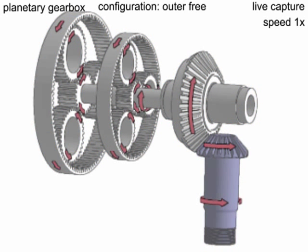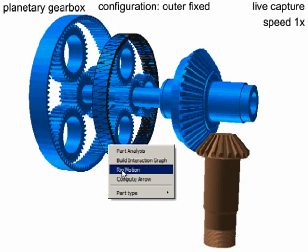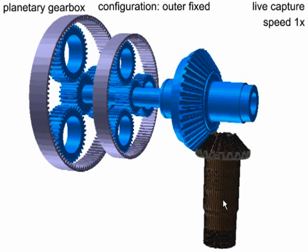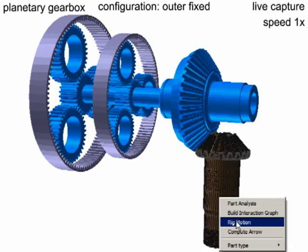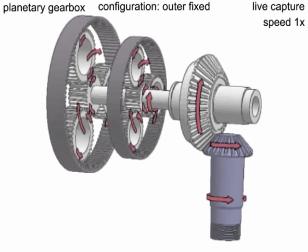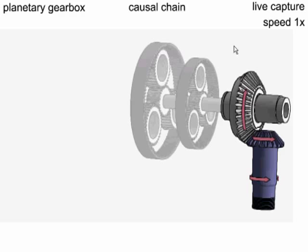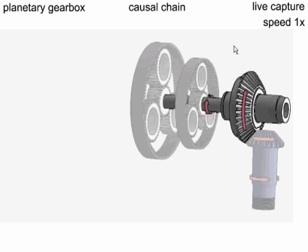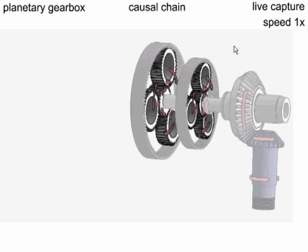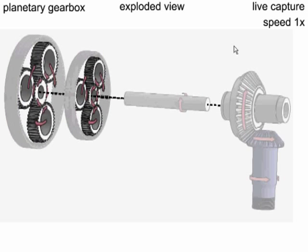The same assembly can behave differently depending on the constraints on its parts. In this configuration, the user fixes the outer rings. For better visibility, we also produce exploded views while respecting the contact relations.